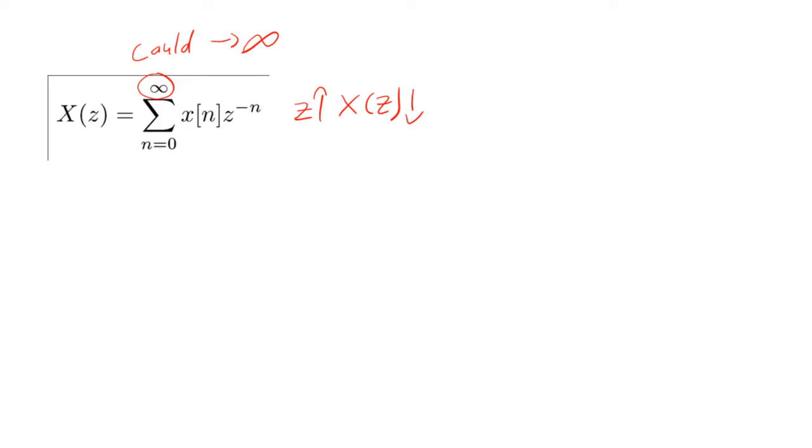When X of n times Z to the negative n shrinks to 0, the sequence will converge towards a constant value.